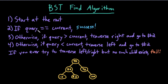Otherwise, if what I'm looking for is not equal to the current node but it's greater than the current node, I would traverse right and repeat exactly what I just did. The thought process here is that because every node in the right subtree is larger than any current node, if my query is larger than my current node, I would not expect to find it in my left subtree — I would only expect to find it in my right subtree.